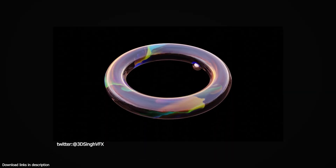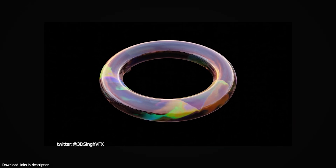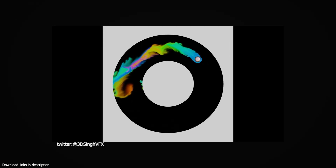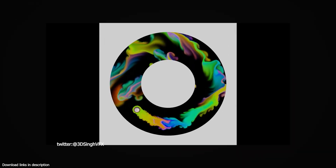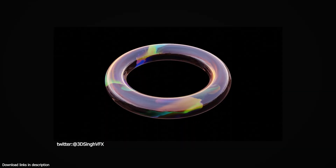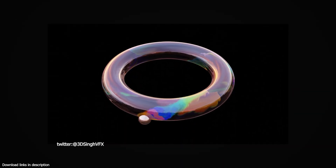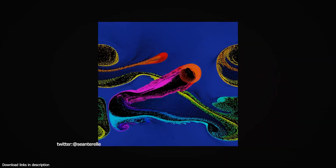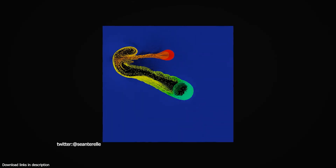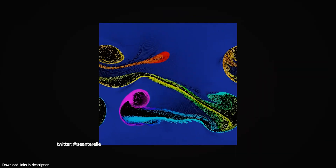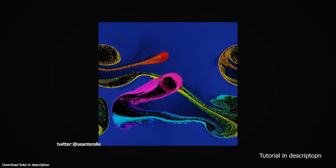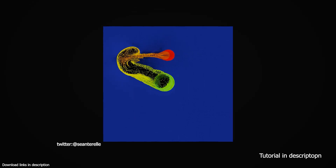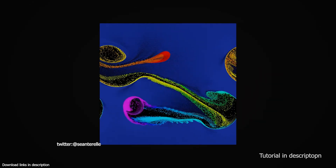At number one, we have a fluid simulation done by Kaldip. Kaldip gives us this amazing fluid simulation done using geometry nodes — it's a fluid simulation inside a texture inside a donut. Kaldip and Sean Terrell, another Blender artist, used the same technique to create this amazing demo. Sean Terrell has a 30-minute tutorial explaining his process of making the simulation from scratch in high detail. If this is something you want to learn, check out the video in the description.